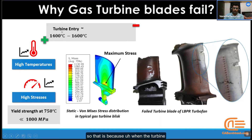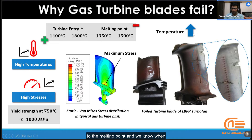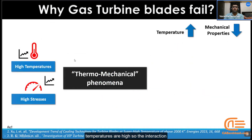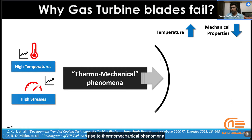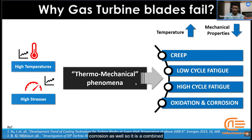That is because the turbine entry temperature is as close as 1400 to 1600 degrees, but the melting point of the material would be 1350 to 1500°C maximum for a typical super alloy used in gas turbine blades. The turbine entry temperature is very close to the melting point, and we know that when temperature increases, the mechanical properties of the material decrease. It is a very critical situation where both stresses and temperatures are high. The interaction between stress and temperature gives rise to thermomechanical phenomena, which includes creep, low cycle fatigue, high cycle fatigue, and oxidation and corrosion — a combined effect of thermal and mechanical stresses.